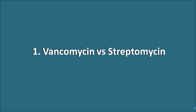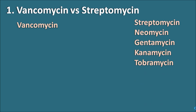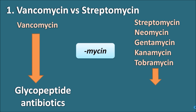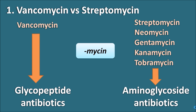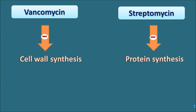The first confusing pair is vancomycin versus streptomycin. Vancomycin is one type of drug, whereas drugs like streptomycin, neomycin, gentamicin, kanamycin, and tobramycin are another set. Both groups share the common suffix '-mycin', but vancomycin is a glycopeptide antibiotic whereas streptomycin and the others are aminoglycoside antibiotics. Their mechanisms also differ: vancomycin blocks cell wall synthesis, while streptomycin blocks protein synthesis.